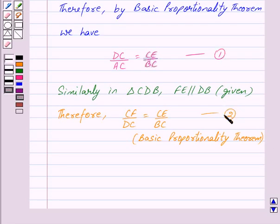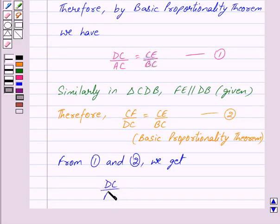From Equations 1 and 2, since the right sides of both equations are the same, we get DC/AC = CF/DC.